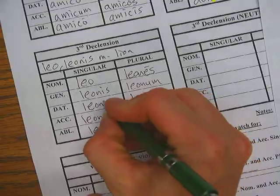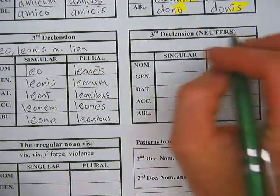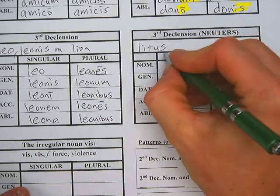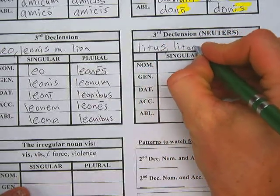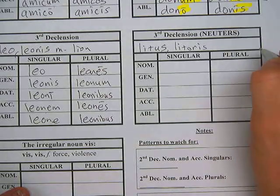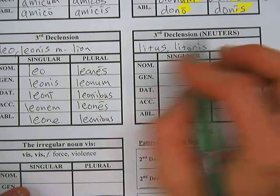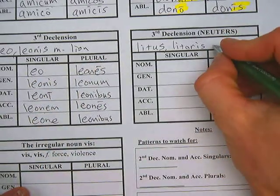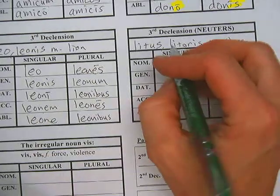I notice here the dative is a long. I didn't realize that. So when you're doing the neuters, I'm going to pick a third declension neuter — this is leetus, which means 'sure,' and it's leetores in the genitive. So notice my stem is leetore, just like my stem here is leon, to get my other forms. And then it's a neuter, and that means 'sure.'